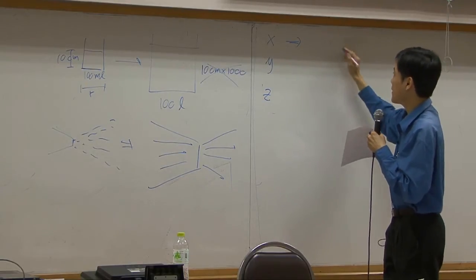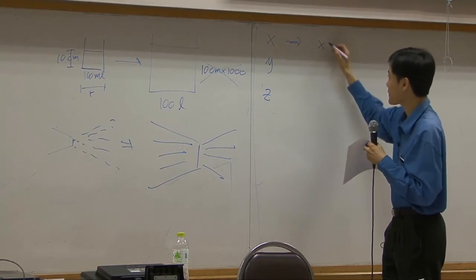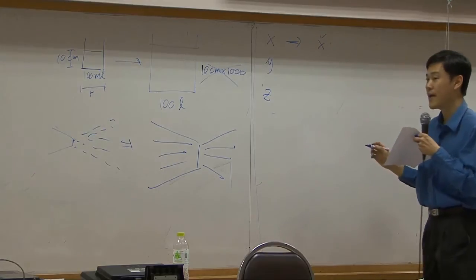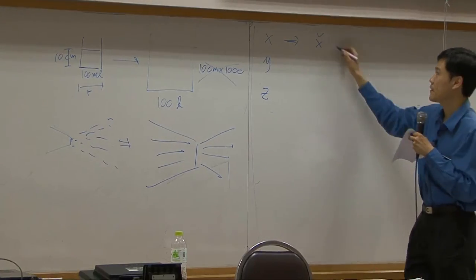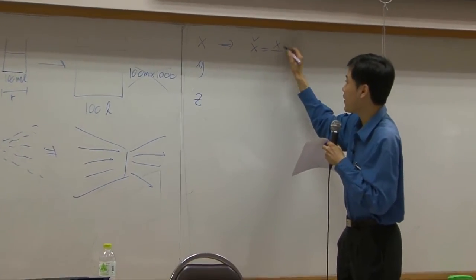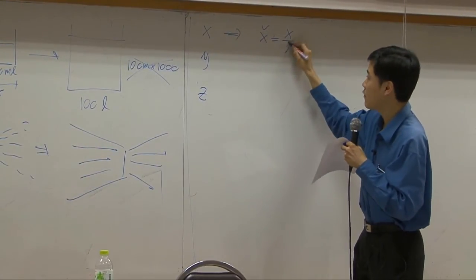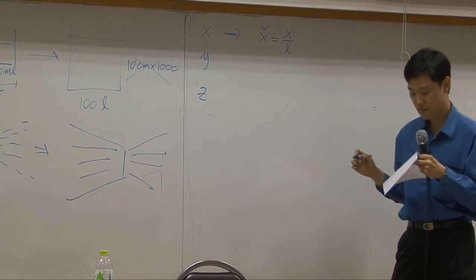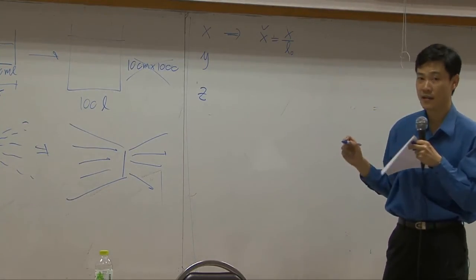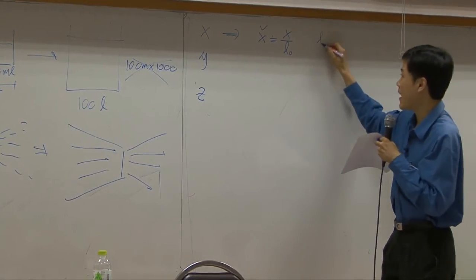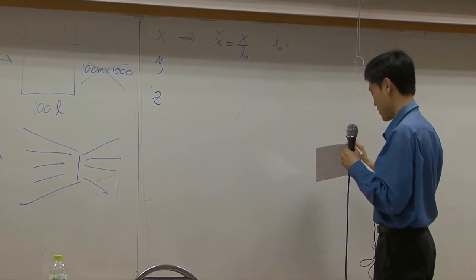If I define another one called x hat, if I divide the original size in x direction with some length, some certain length, L0 here is called characteristic length.